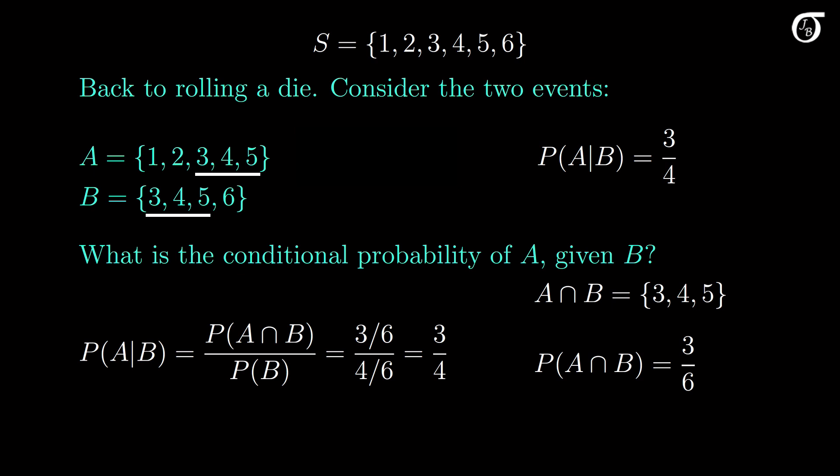This is what we got above using a little logic. Note that the unconditional probability of event A is 5 over 6, since A contains 5 of the 6 equally likely sample points. The knowledge that event B has occurred — that the number is a 3, 4, 5, or 6 — has reduced the probability of event A from 5 over 6 to 3 quarters.